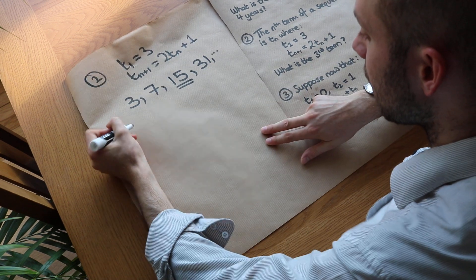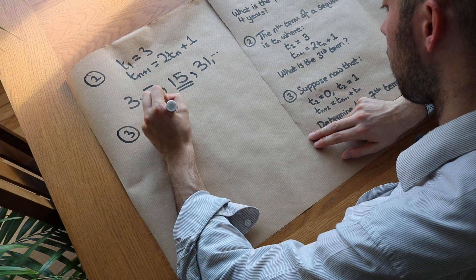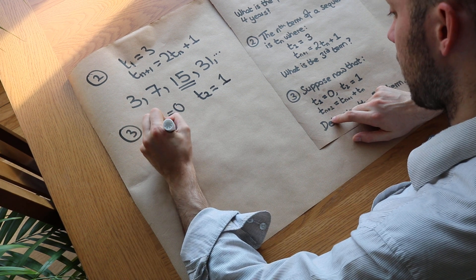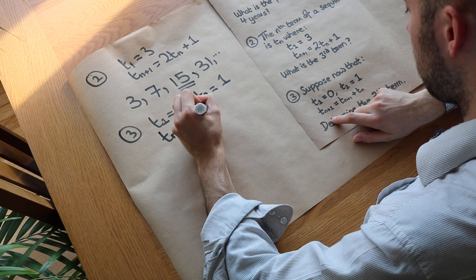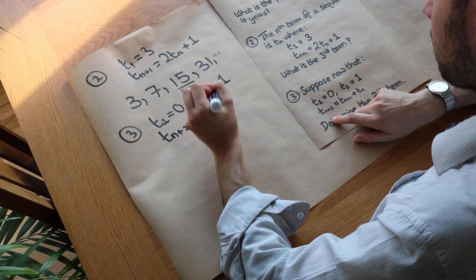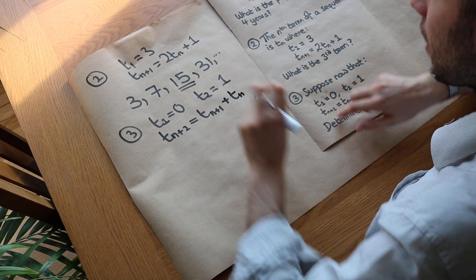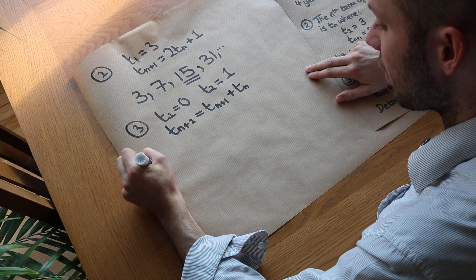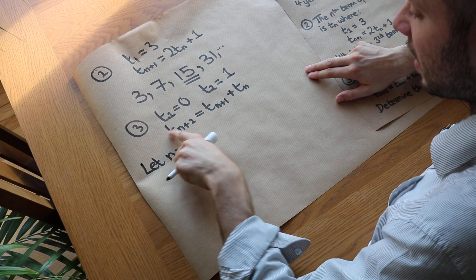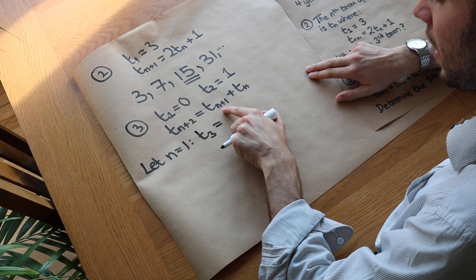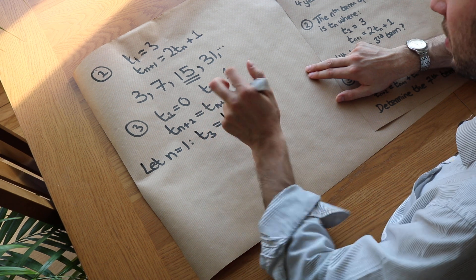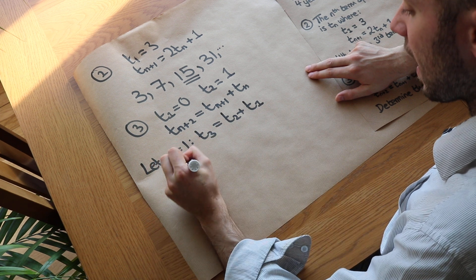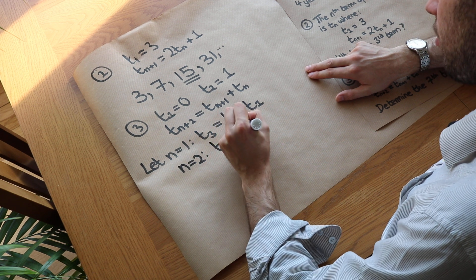Finally, this interesting one: t1 equals 0, t2 equals 1, and we've got a more complicated formula. These formulas are sometimes known as recurrences because each term is based on previous terms in the sequence. If we let n equal to 1, we get t3 equals t2 plus t1 — the third term is the second term plus the first term. And if we let n equal to 2, we similarly get t4 equals t3 plus t2.